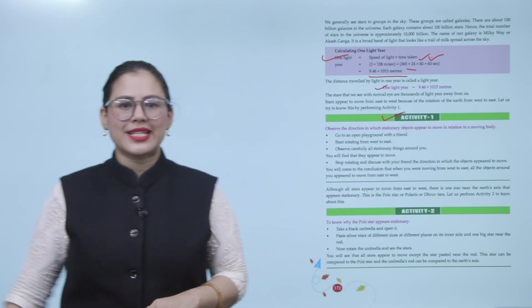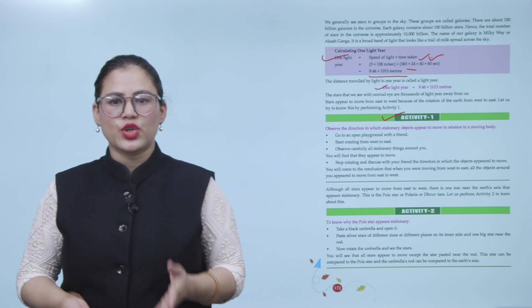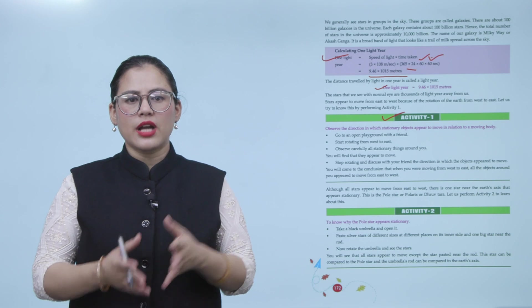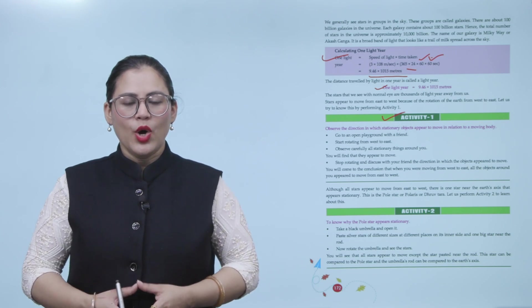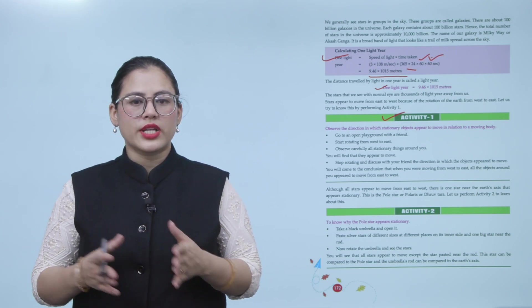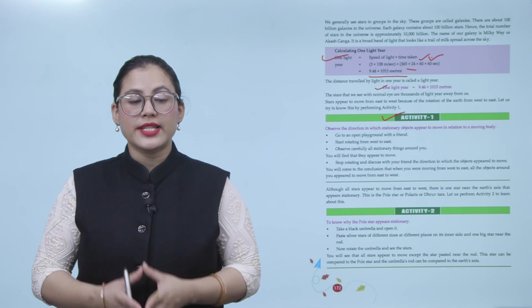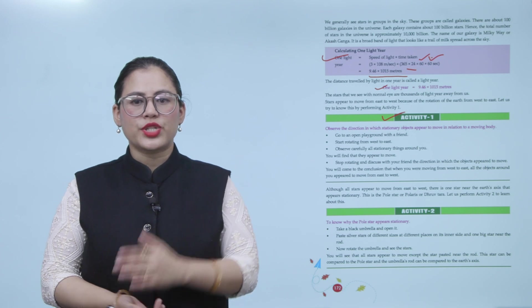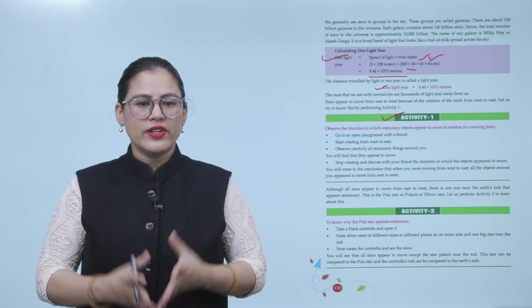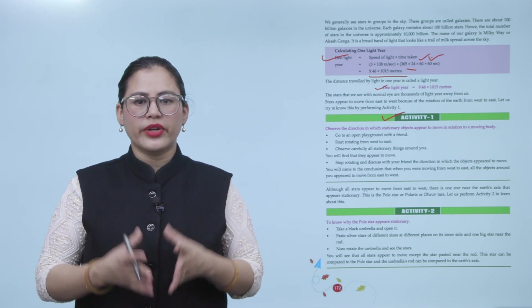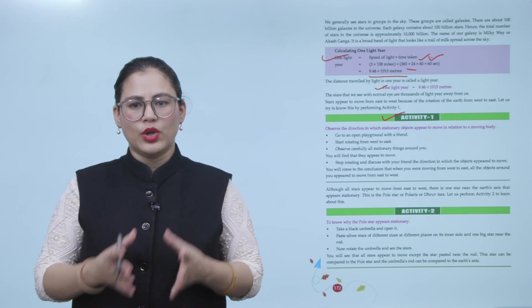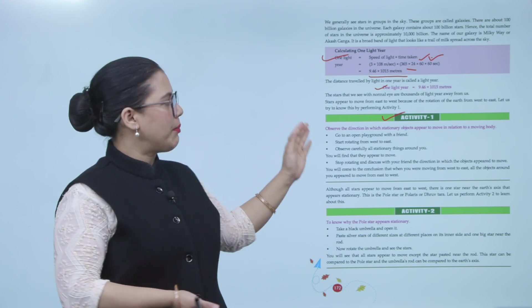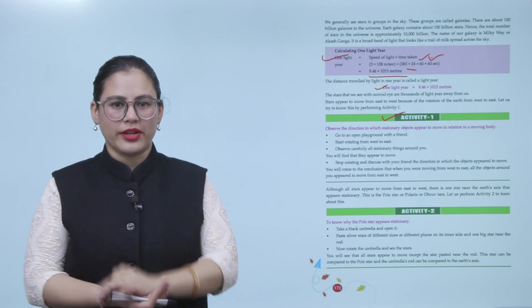Activity one: Observe the direction in which stationary objects appear to move in relation to a moving body. Go to an open playground with a friend. Start rotating from west to east. Observe carefully all stationary things around you. You will find that they appear to move. Stop rotating and discuss with your friend the direction in which the objects appear to move. You will come to the conclusion that when you were moving from west to east, all the objects around you appear to move from east to west. This activity you must do with your friend.